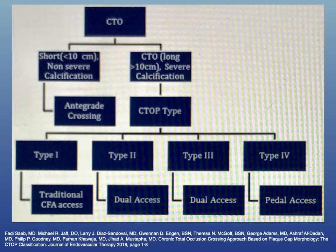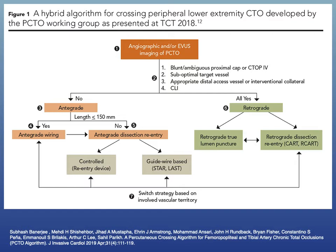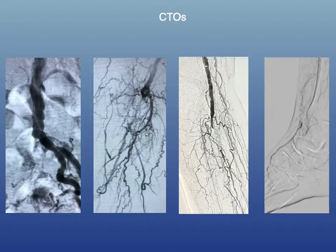There are various articles, tables, and flowcharts that give you an idea of where to start with CTOs so you can have an algorithmic or logical approach. This started in the coronary literature and was adapted for peripheral guidelines. We now even have a peripheral or lower extremity CTO algorithm developed by the PCTO working group, presented at TCT in 2018.